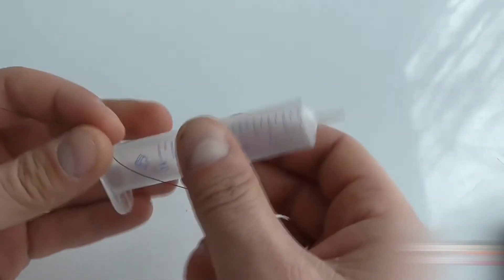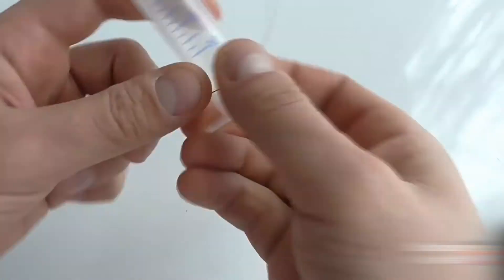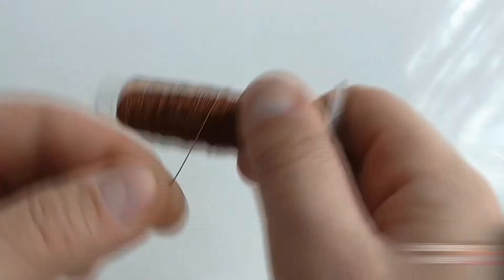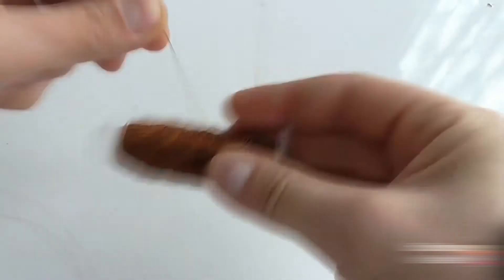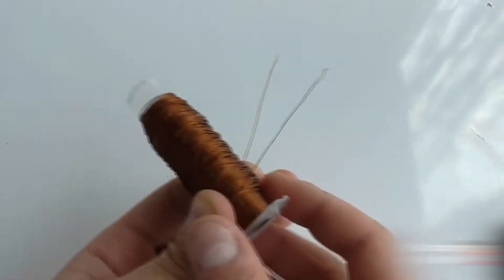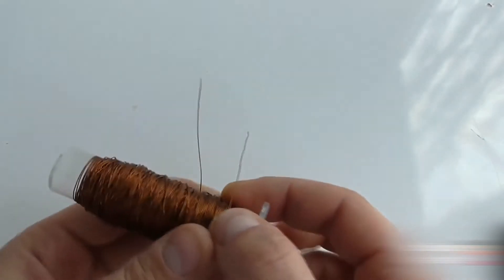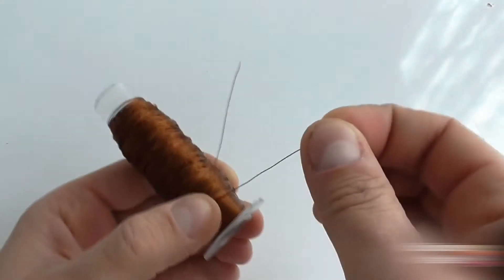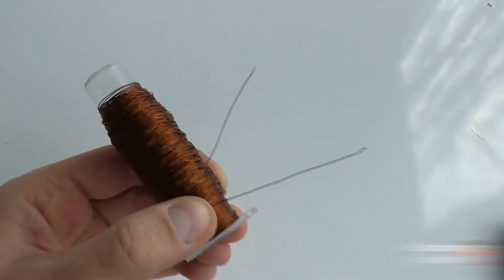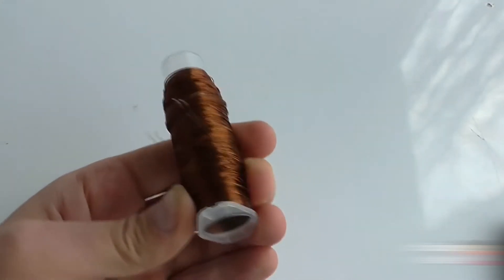Wrap this wire over the barrel. This is how it should look. I made about a thousand rolls. Secure everything with tape.